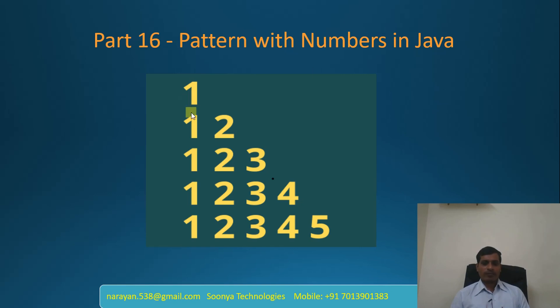The pattern is: 1, then 1 2, then 1 2 3, then 1 2 3 4, then 1 2 3 4 5, and so on.